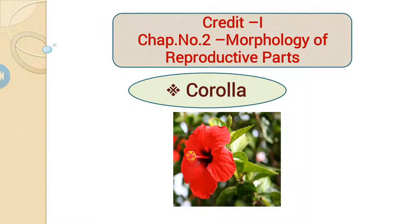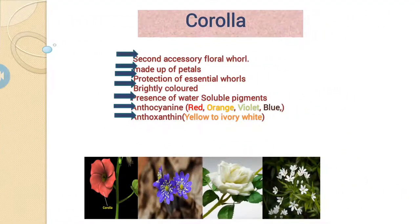Today we will discuss Chapter No. 2, Morphology of Reproductive Parts. The first topic is Corolla. Corolla is the second accessory floral whorl.